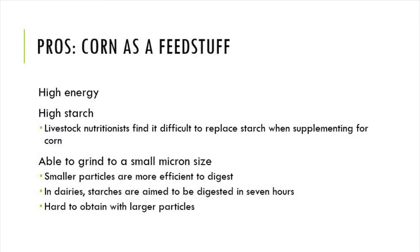There are several pros to using corn as a feedstuff. First and foremost, corn has a high energy content, measured by metabolized energy in mega calories per kilogram of feed on a dry matter basis. This energy is derived from starch. A corn kernel contains a lot of starch through the endosperm. Livestock nutritionists find it difficult to replace the starch when supplementing corn for other needs.